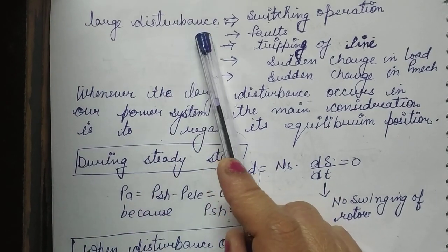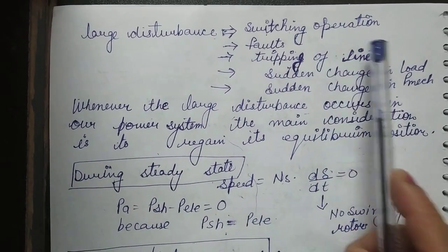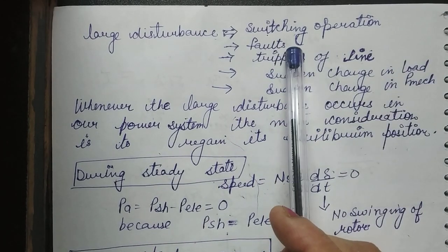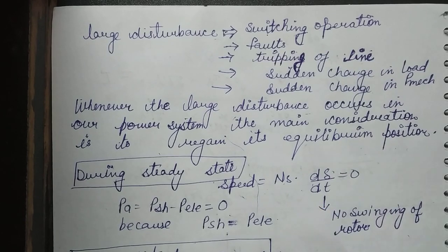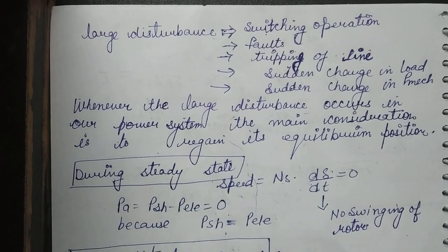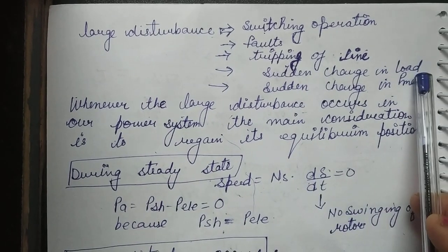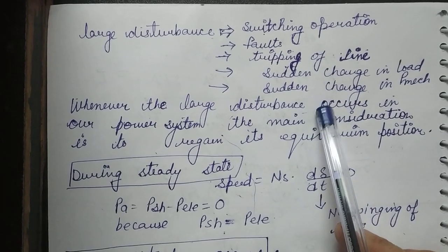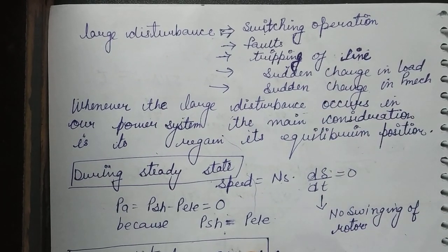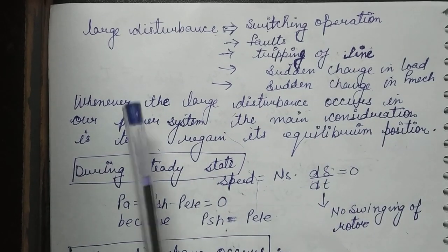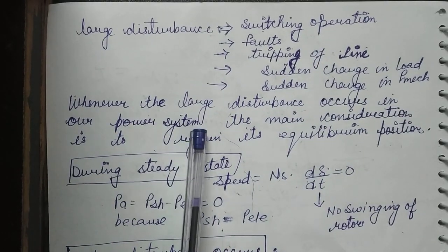Large disturbances include switching operations or faults — whether symmetrical or unsymmetrical — tripping of a line such as a double circuit line, faults for maintenance purposes, sudden changes in load, and sudden changes in mechanical power in the generator. Whenever such disturbances occur, these come under large disturbances, and we study them under transient state conditions.